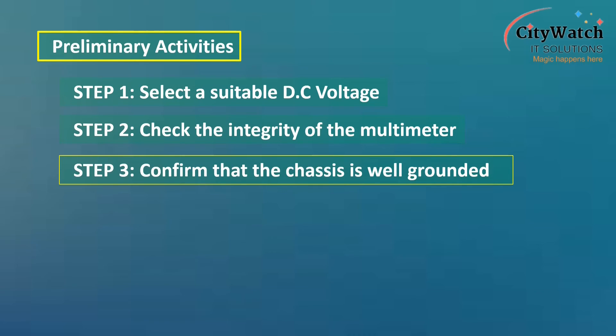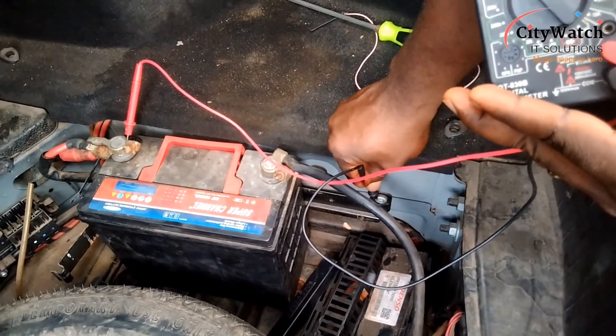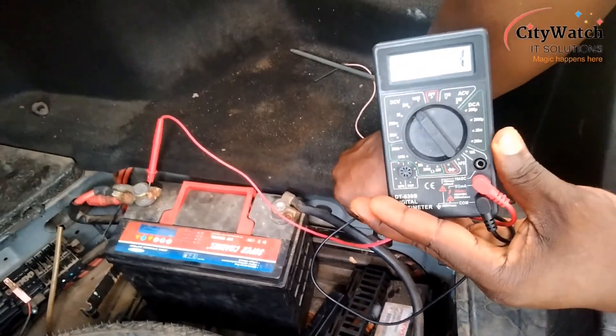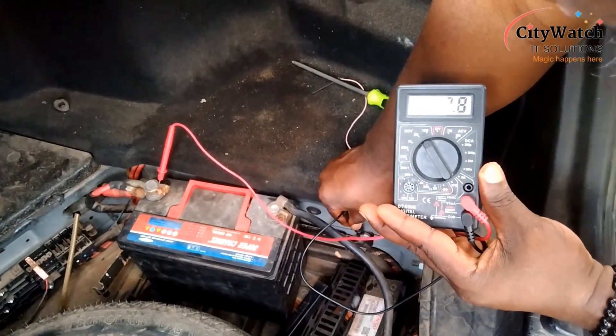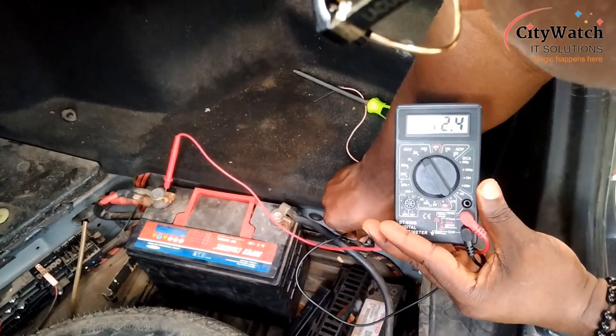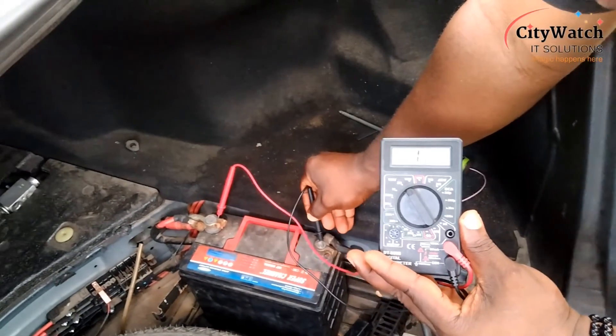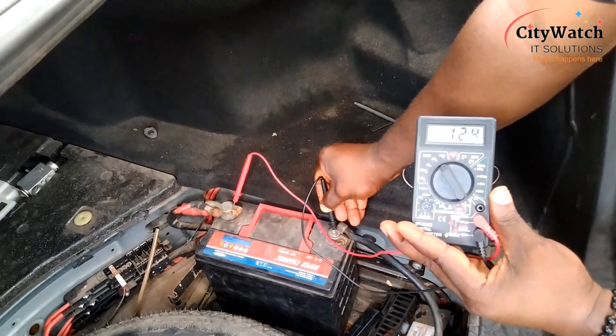Confirm that the vehicle chassis is properly grounded. To confirm this, find a clean bare metal surface on the vehicle chassis and place the negative probe on the bare metal surface while the positive probe is still in direct contact with the battery positive terminal.